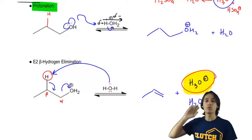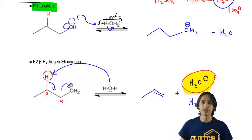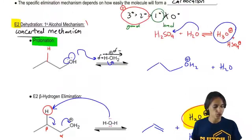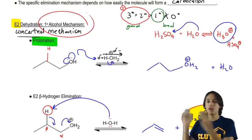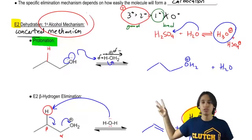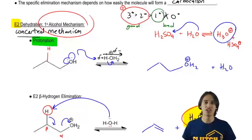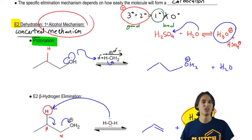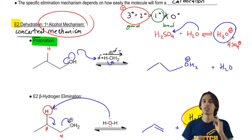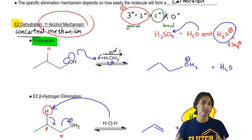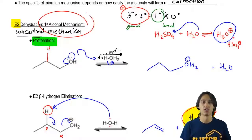So that was the E2 mechanism, which only applies to primary alcohols. So if it's a primary alcohol, you would use this. But what about if it's a secondary or a tertiary? You're going to have to find out — that's what our next topic is all about. So let's go ahead and see what happens when you have a secondary or a tertiary alcohol.